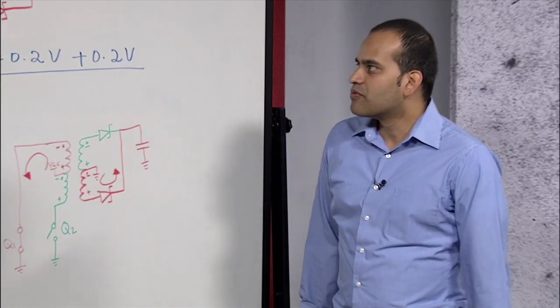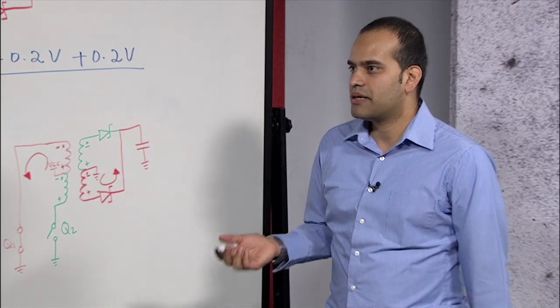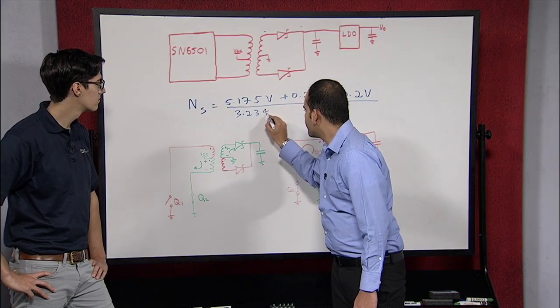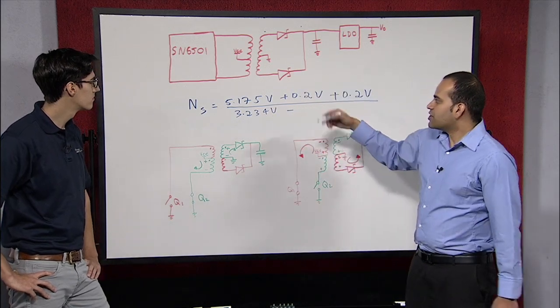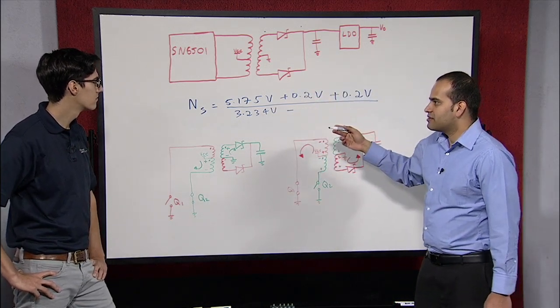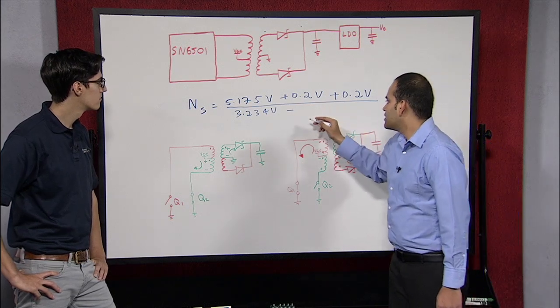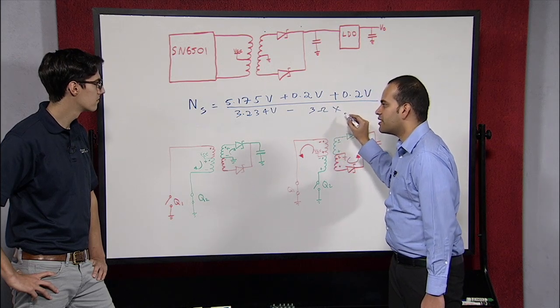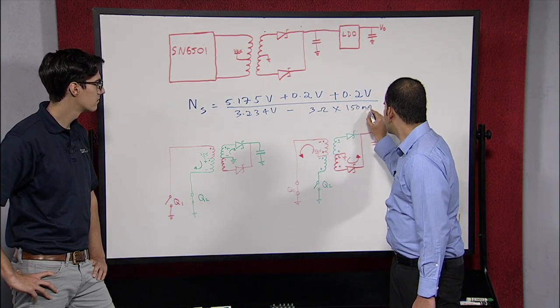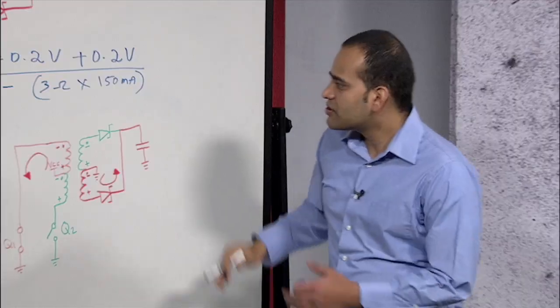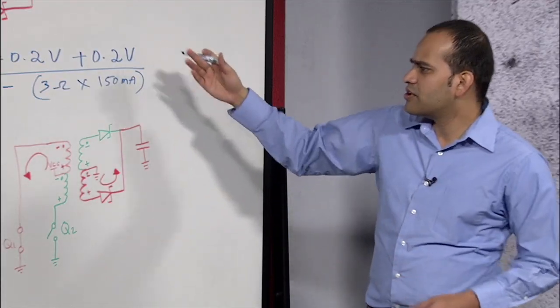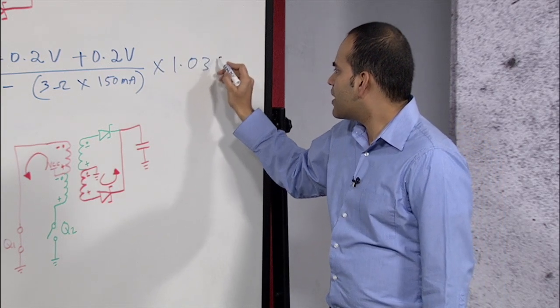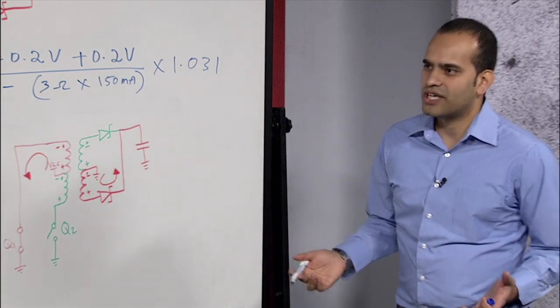The worst-case input voltage is 3.3 volts plus or minus 10%, which comes up to 3.234 volts, minus the voltage drop of the output transistor of the driver, which is the RDS on of the transistor times maximum current, which is 150 milliamps. So this ratio of V out to V in is multiplied with a factor of 1.031 to take into account typical efficiency losses.